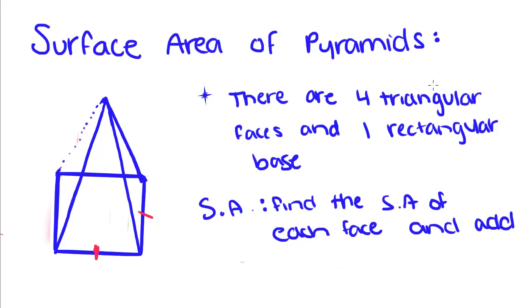To find the surface area of a pyramid, you find the surface area of each face and add them together. We're going to write our formula: Surface area equals the area of the base, which is length times width, or because it's a square, side squared,